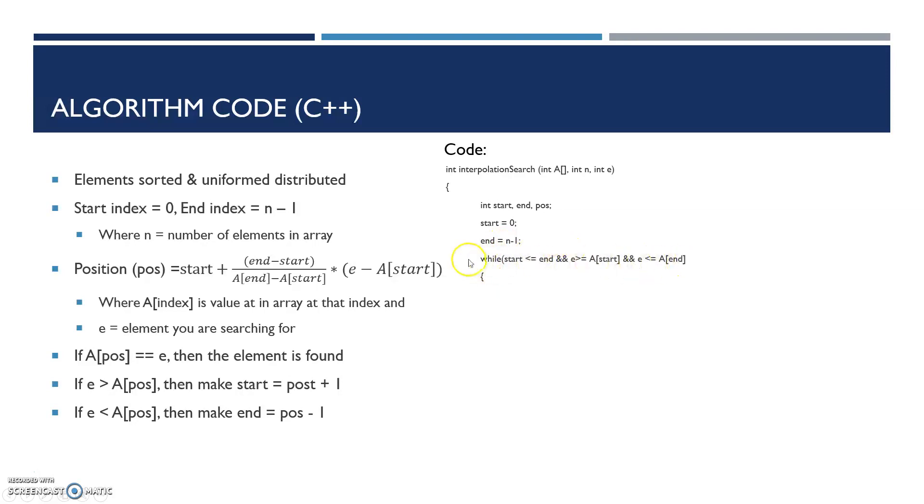For our searching algorithm, we want to continually search while start is less than or equal to end, to make sure the program hasn't broken, and e is greater than or equal to start or less than or equal to end, to make sure it's within the array. For position, you convert directly from our algorithm, using a double to make sure division and multiplication work properly.